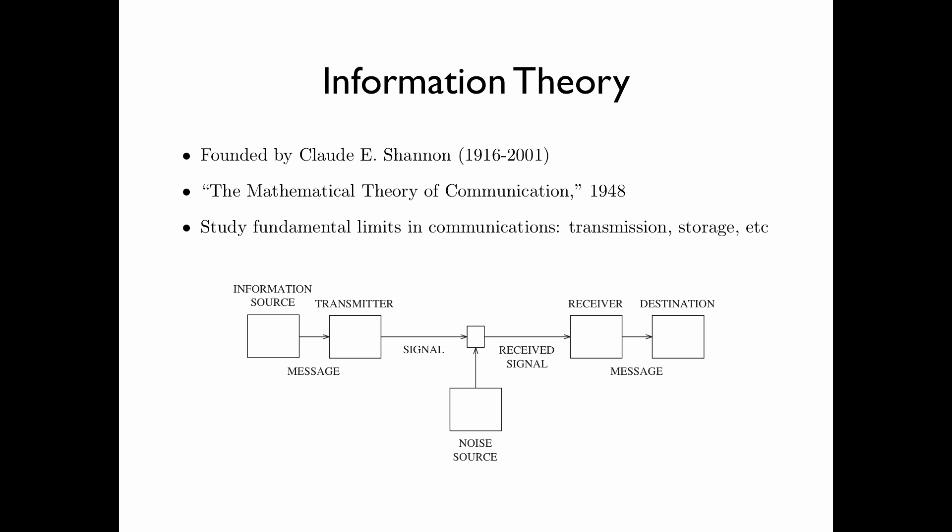This figure, taken from Shannon's 1948 paper, shows a basic communication system. On the left is an information source that generates a message to be transmitted. The transmitter processes the message into a signal and transmits it through a channel. The received signal may not be exactly the same as the transmitted signal because it may be contaminated by a noise source. The receiver, based on the received signal, decodes the message and delivers it to the destination.